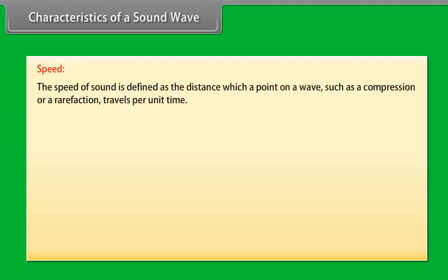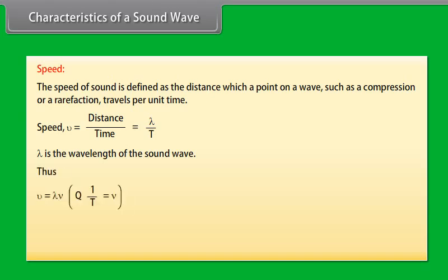Speed. The speed of sound is defined as the distance with which a point on a wave, such as a compression or a rarefaction, travels per unit time. We know that speed U is equal to distance upon time, which is equal to Lambda upon T. Here Lambda is the wavelength of the sound wave. It is the distance travelled by the sound wave in one time period of the wave. Thus U is equal to Lambda into Nu. That is, speed is equal to wavelength into frequency.